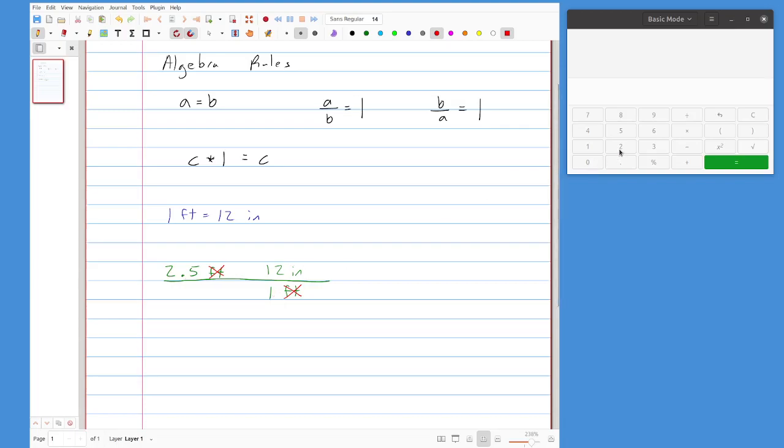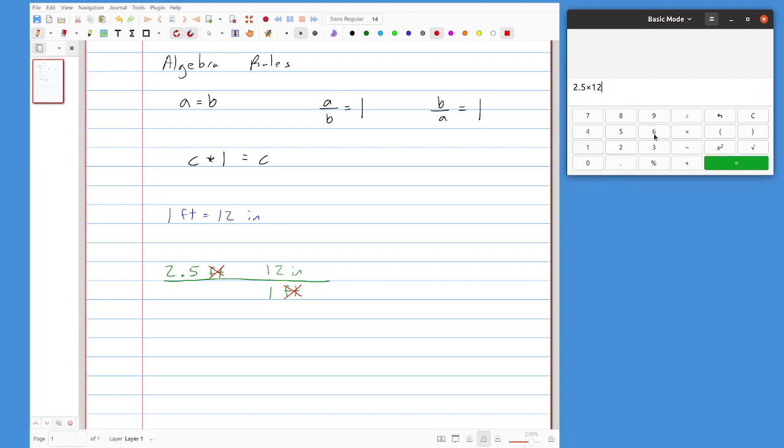Now I have a little calculator open over here, and we can type in 2.5 times 12 and divided by 1. And that tells me that it's equal to 30 inches. So my answer here is 30 inches. Now what I've really done is looking at this problem, I've said that 2.5 feet is equivalent to 30 inches, and I converted the feet into the inches.